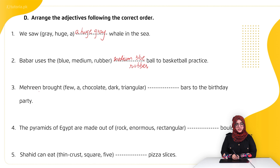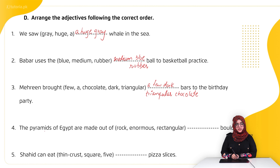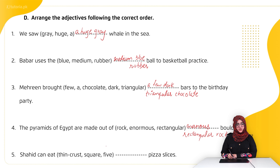Third: 'Marine brought a few dark chocolate triangular bars to the birthday party' — quantity ('a few') first, then colour ('dark'), then shape ('triangular'), then material ('chocolate'). Fourth: 'The pyramids of Egypt are made out of enormous rectangular rock boulders' — size ('enormous'), then shape ('rectangular'), then material ('rock'). Fifth: 'Shahid can eat five square thin-crust pizza slices.'